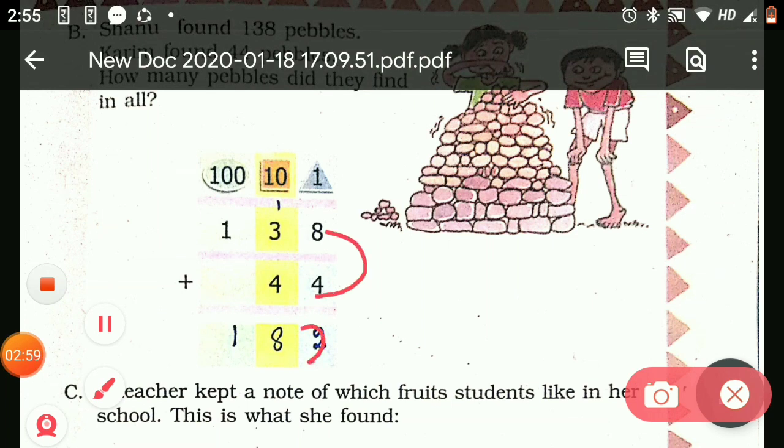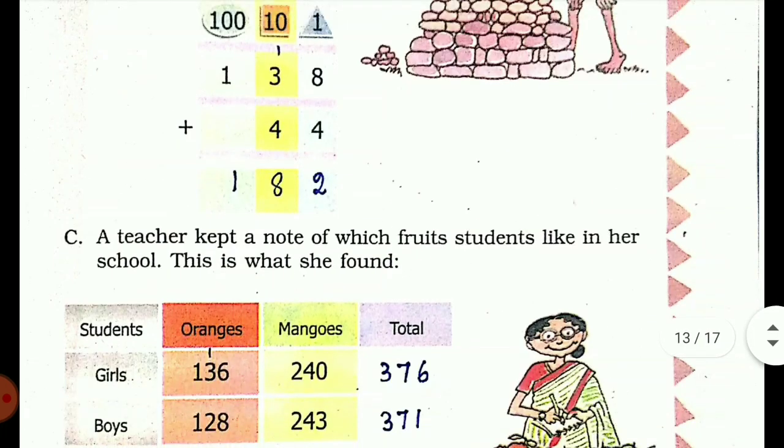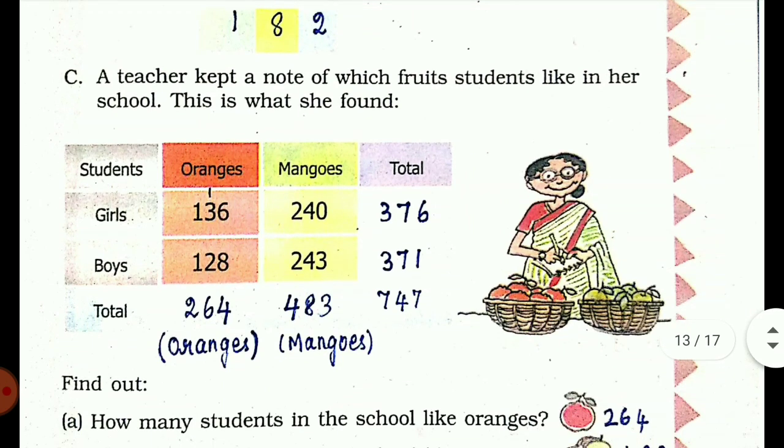A teacher kept a note of which fruits students like in our school. This is what she found. See, a teacher is making a note of fruits which students like. First she is asking the girls. Girls who liked oranges are 136. Girls who liked mangoes are 240. Boys who liked oranges are 128. Boys who liked mangoes are 243.